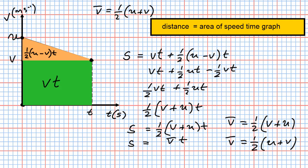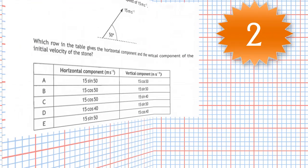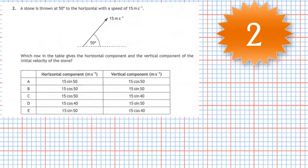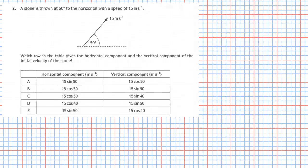Question two from section one of the 2019 Higher Physics examination. A stone is thrown at 50 degrees to the horizontal with a speed of 15 meters per second. Which row on the table gives the horizontal component and the vertical component of the initial velocity of the stone?